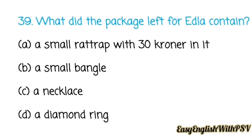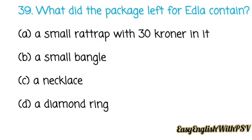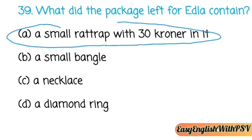Question number thirty-nine: What did the package left for Edla contain — a small rat trap with thirty kroners, a small bangle, a necklace, or a diamond ring? You can easily answer this: a small rat trap with thirty kroners in it. Not only that, there was a note — a letter — as well.